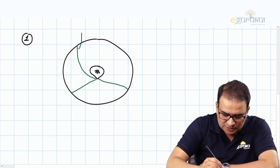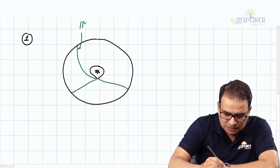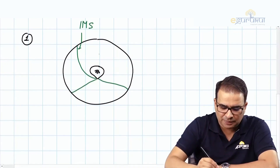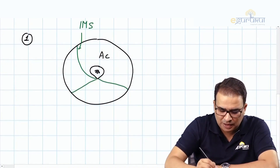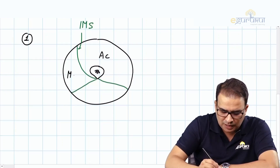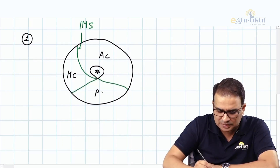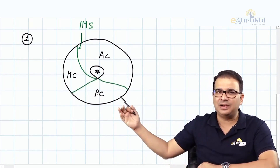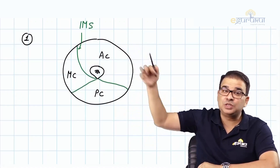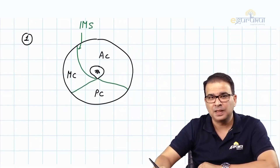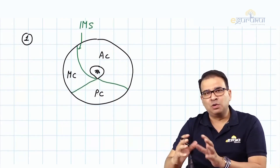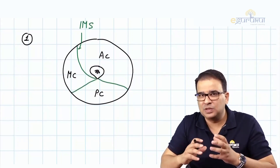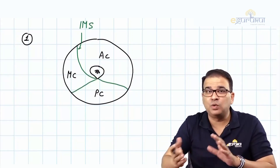These intermuscular septa divide the thigh into three compartments: the anterior compartment, the medial compartment, and the posterior compartment. That is how they are divided by the intermuscular septum, which is a modification of the fascia lata. Every compartment has its own muscles, nerve supply, and blood supply, but certain structures extend from one compartment to another.